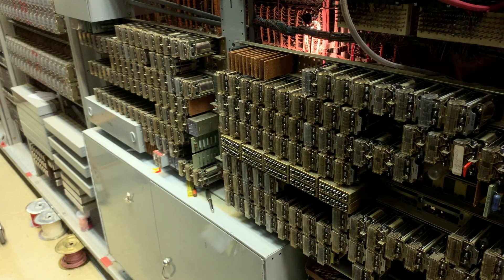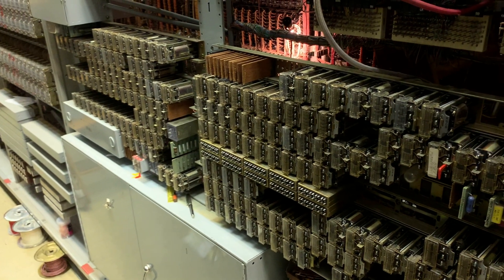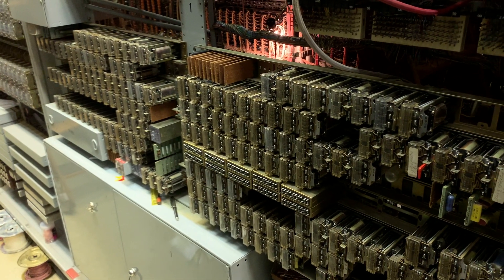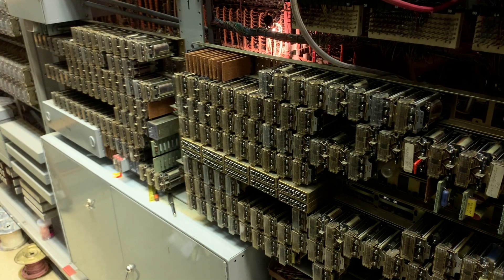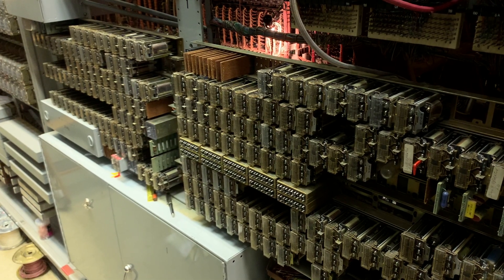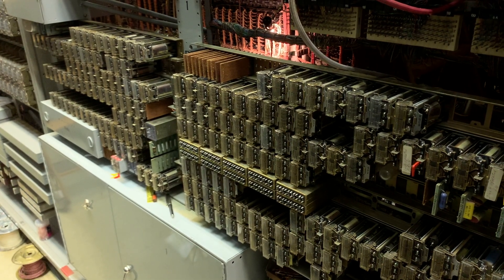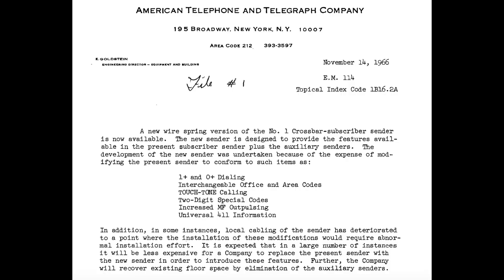Speaking of senders, the one we're going to use for this call is a new style sender. These were first introduced in 1966 and provided a number of features that weren't available in the old style senders like the one we used in the last call. Our number 1 crossbar got these new senders installed in 1973.